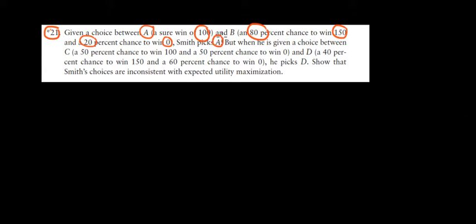In this case we would pick A. Now when we have a choice between C, which is a 50% chance to win 100 and a 50% chance to win zero, and option D, which is a 40% chance to win 150 and a 60% chance to win zero, we would choose D.